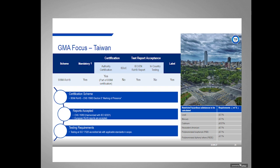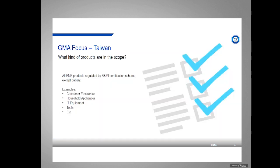Our next country is Taiwan. Taiwan's RoHS scheme is called BSMI RoHS. It is a mandatory scheme and is part of the safety and EMC BSMI certification scheme — it is not a self-declaration. They allow European or international test reports to show conformity and will accept test reports from any accredited lab; it doesn't have to be done in Taiwan. The labeling scheme follows the BSMI safety and EMC scheme as well.